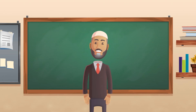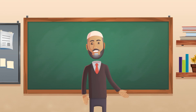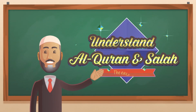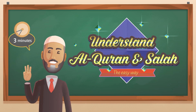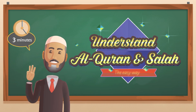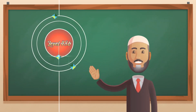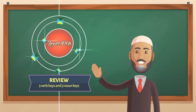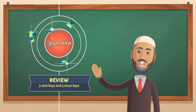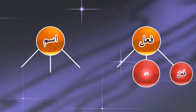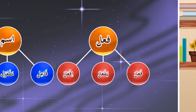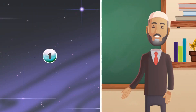Bismillah, Alhamdulillah, wassalatu wassalam ala Rasoolillah. Understand Al-Quran and Salah the easy way — three-minute series, lesson number 48b. Review of the three verb keys and three noun keys: fa'ala yaf'al if'al / fa'al maf'ool fi'l.